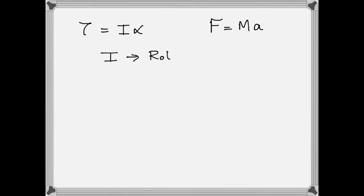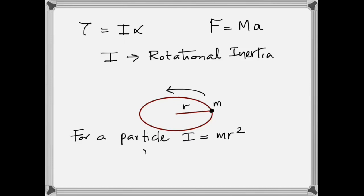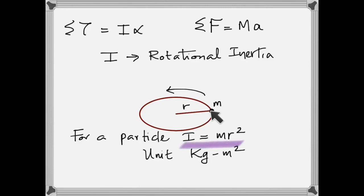If you have a particle of mass M making a circular path of radius R, then the rotational inertia is simply MR squared. Rotational inertia is the product of mass and the square of the distance of that mass from the axis of rotation. That formula is for a particle: I equals MR squared, and the unit is kilogram meter squared.